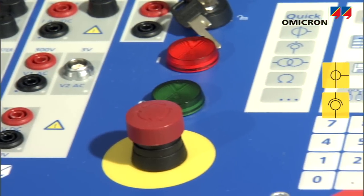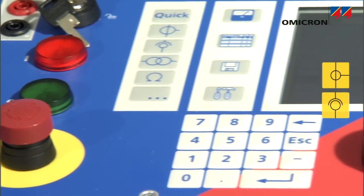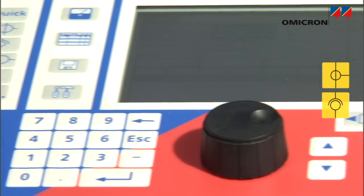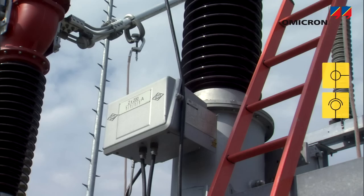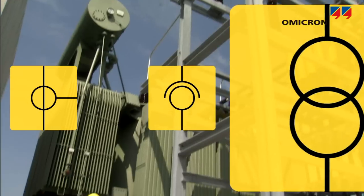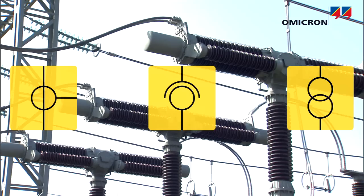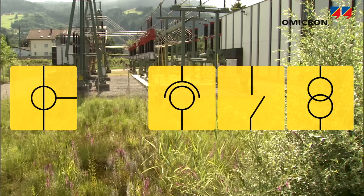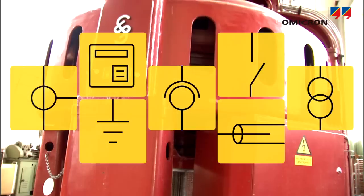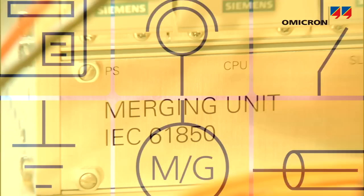With the CPC, a number of test devices can be replaced since it is able to perform many tests not only on CTs and VTs, but also on power transformers, circuit breakers, grounding systems, and many other electrical apparatus as well.